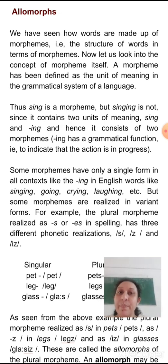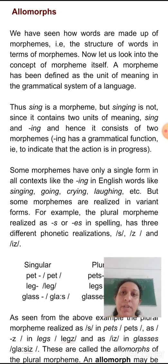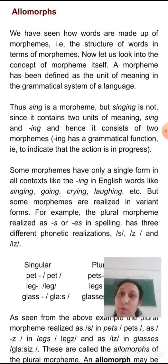So what's a morpheme? A morpheme may be defined as the meaningful unit in the structure of a language. Consider the word 'sing' — 'sing' is a morpheme. But 'singing' is not a single morpheme; it contains two units, that is 'sing' and 'ing'. It consists of two morphemes.